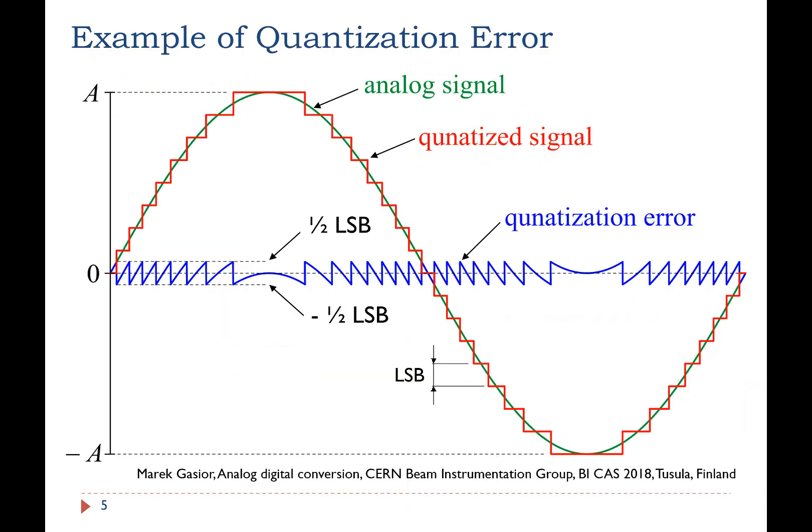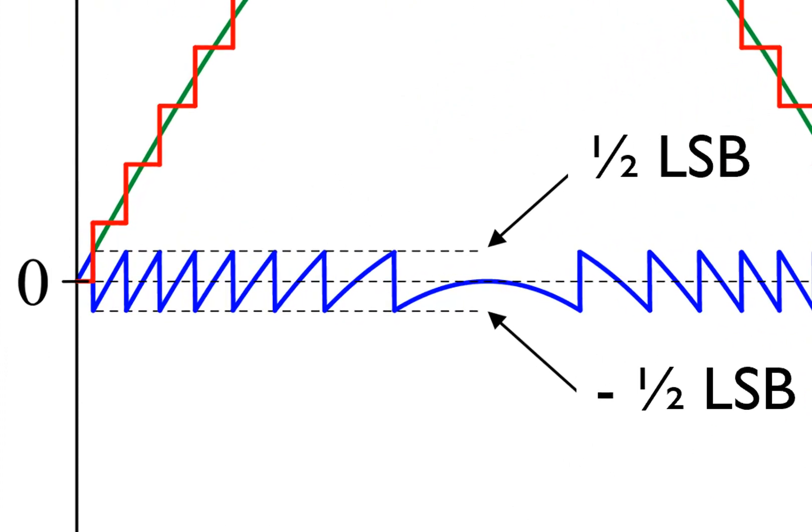Let's use another example to show the quantization error. In this figure, the input signal is a sine wave shown in green color. Suppose the resolution of the ADC is 5-bit, and the ADC can accept both positive and negative analog signals. The output of the ADC is shown in red color. The blue line shows the quantization error, which is the difference between the input and the output. As we can see, the quantization error is uniformly distributed between negative 0.5 LSB and positive 0.5 LSB.